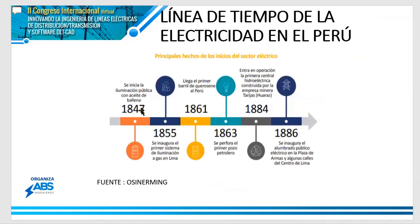Tenemos aquí una pequeña línea de tiempo: en el año 1847, se ilumina una calle con aceite de ballena. No es hace mucho. En 1855, se ilumina Lima, pero a gas. En 1861, llega el primer barril de querosene al Perú. En 1863, se perfora el primer pozo petrolero.